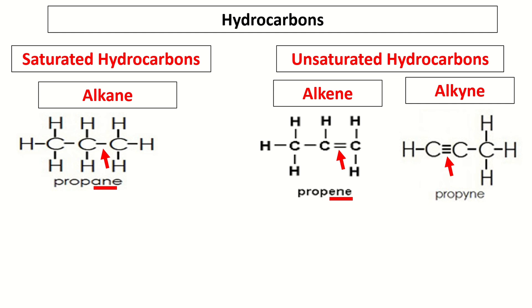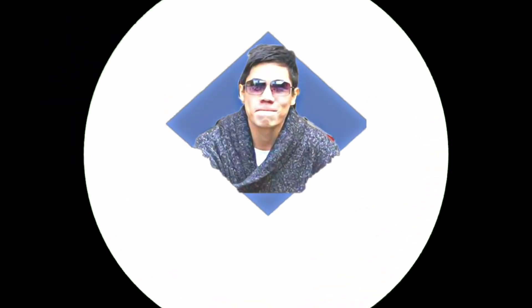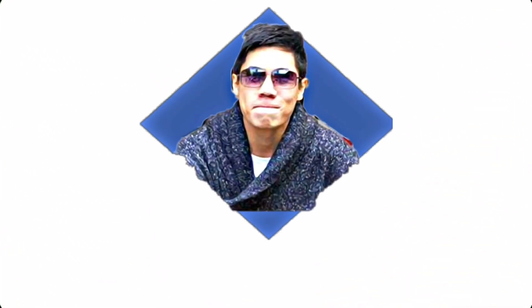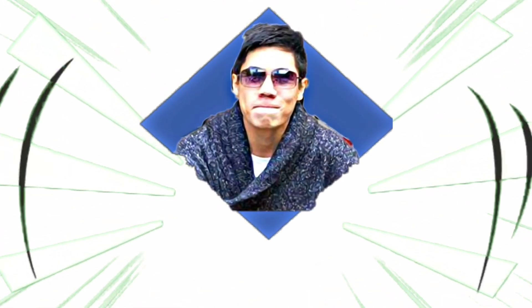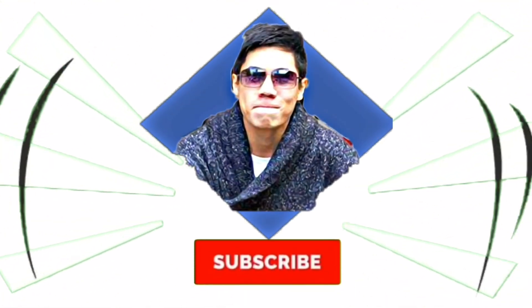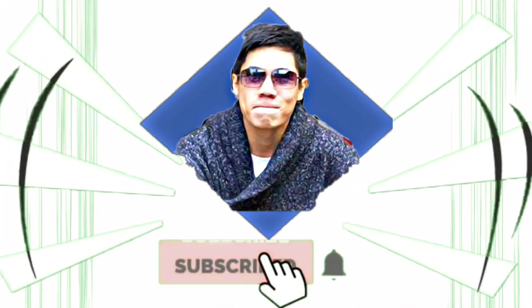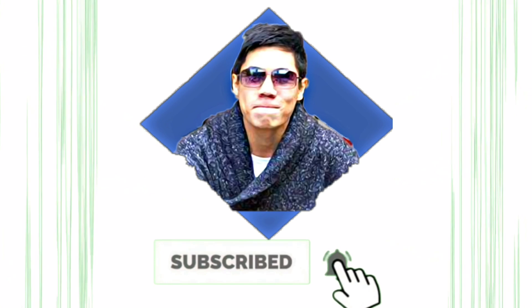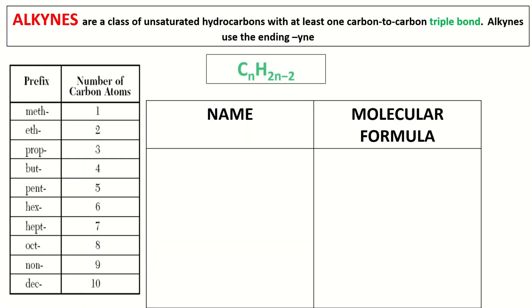In this video, we will discuss all about alkynes. The general formula of alkynes is CₙH₂ₙ₋₂.